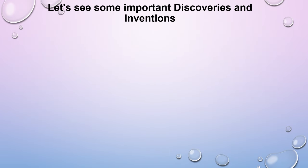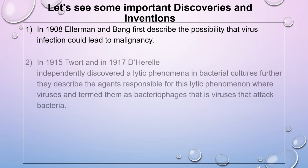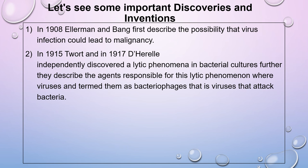Let's see some important discoveries and inventions. In 1908, Ellermann and Bang first described the possibility that virus infection could lead to malignancy. In 1915, Twort and in 1917, D'Herelle independently discovered a lytic phenomenon in bacterial cultures. They described the agents responsible as viruses and termed them bacteriophages — viruses that attack bacteria.